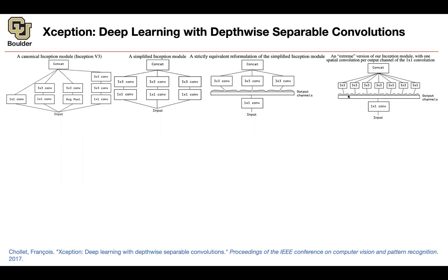These are single channels, and then you are doing your 3x3 convolutions channel-wise. So this is a new perspective: you start from Inception, you simplify it, you do group convolutions — this is where you have ResNext — and then you take it to the extreme to give you depth-wise separable convolutions. Actually, this is just depth-wise convolution. It becomes depth-wise separable when you add a point-wise convolution on top of that.